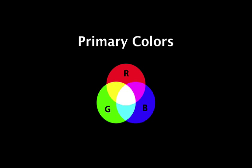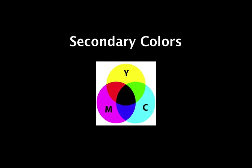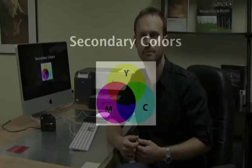Secondary colors, consisting of cyan, magenta, and yellow, are often referred to as subtractive colors, as when applied to a white medium in equal parts, the combination moves towards black. Thus, colors must be subtracted to achieve white.